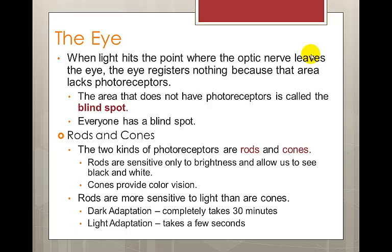Full dark adaptation, which occurs from going from constant light to darkness — such as turning out your bedroom lights at night — takes about 30 minutes. As people get older, this process takes longer, causing many older persons to be less able to see at night and in darkened rooms. When going from a darkened room to one that is brightly lit, the opposite process occurs. The cones have to adapt to the increased level of light, and they accomplish this light adaptation much more quickly than the rods adapt to darkness — it takes a few seconds at most.